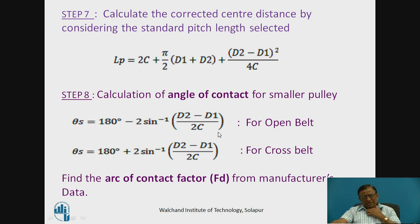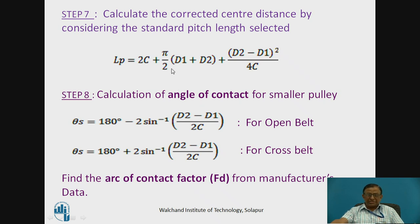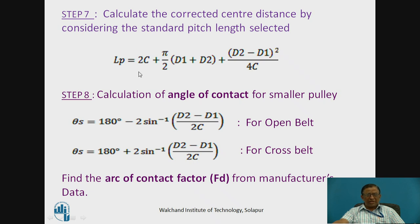Since the pitch length selected differs from what was calculated, it becomes necessary to correct the centre distance, as we started with an approximate centre distance requirement. That deviation is accounted for by calculating a corrected centre distance using the same equation.